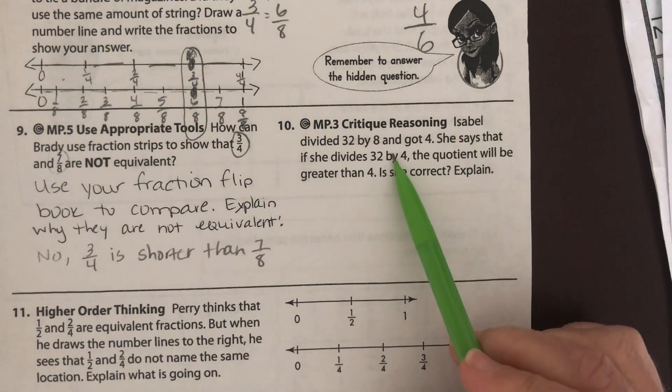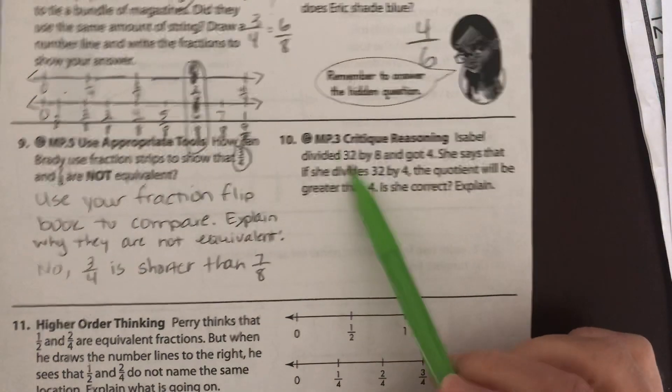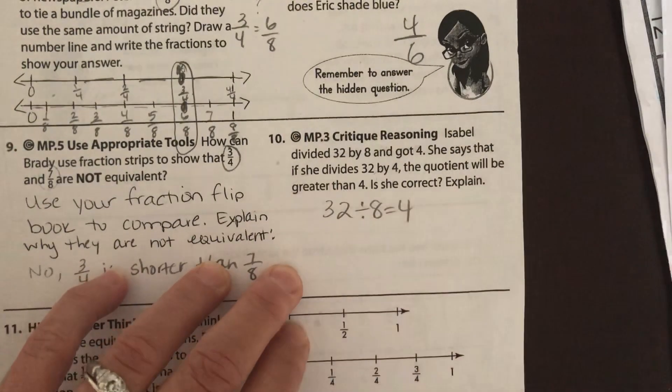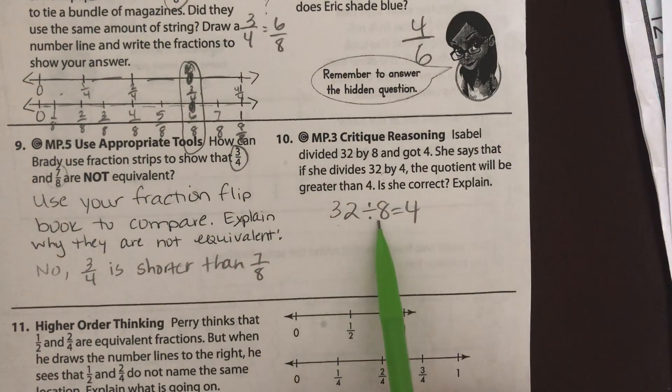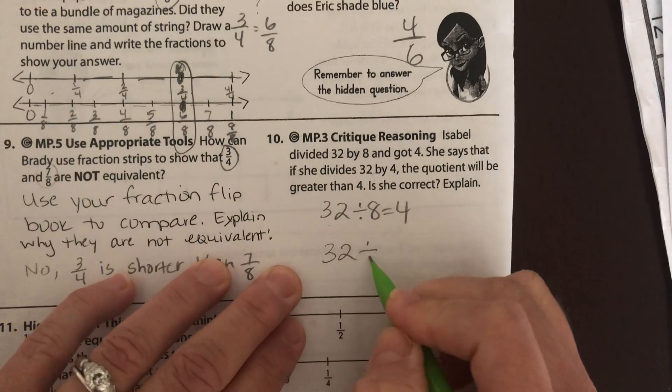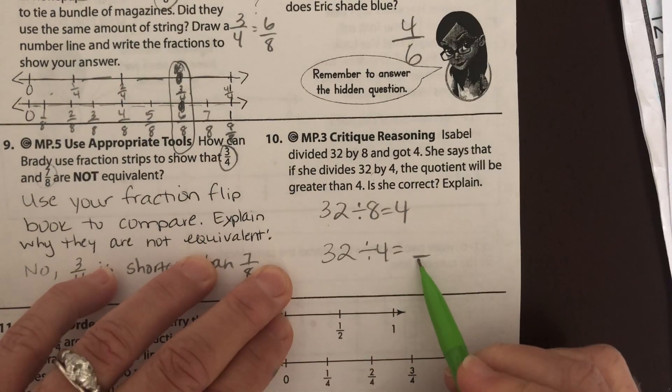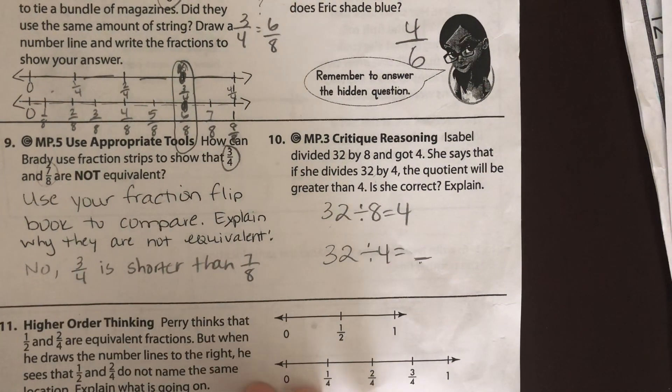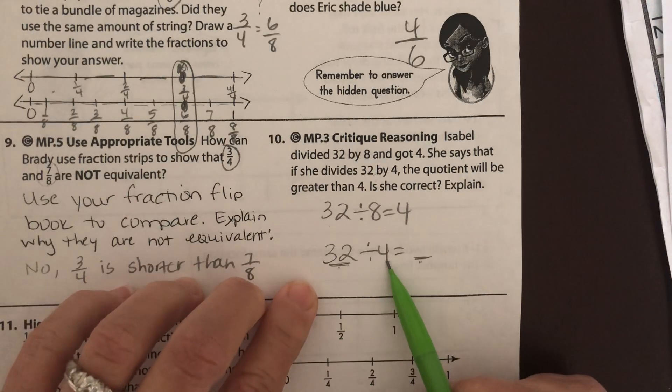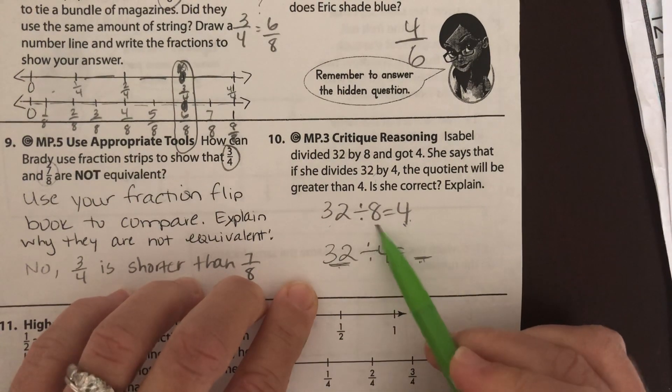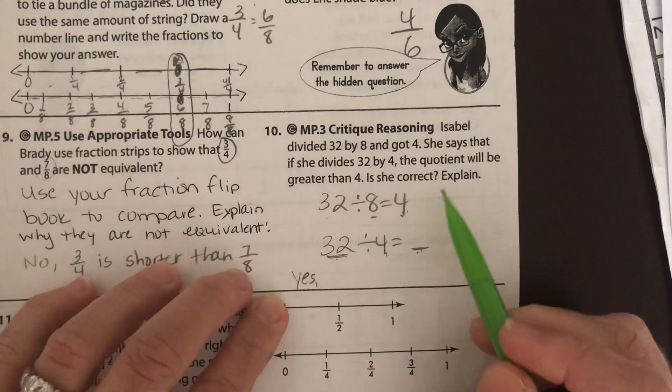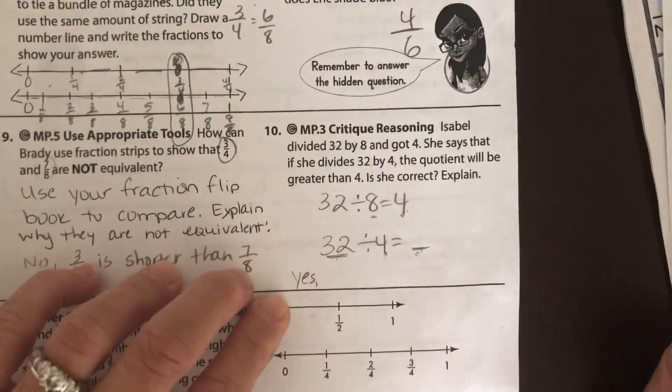All right, this one doesn't really have anything to do with fractions. We're going back to equal groups and division. Isabel says she divided 32 by 8 and got 4. So she takes 32, she divides it by 8 and she gets 4. This is like I had 32 slices of pizza and I divided them equally between 8 people everyone gets 4 slices. She says that if she does 32 divided by 4 that the quotient, that's the answer, is going to be greater than 4. So she's saying if I take these 32 pieces of pizza and I divide them equally between 4 people, everyone's going to get more than if I divide it by 8. Is she correct? Yes, she is.